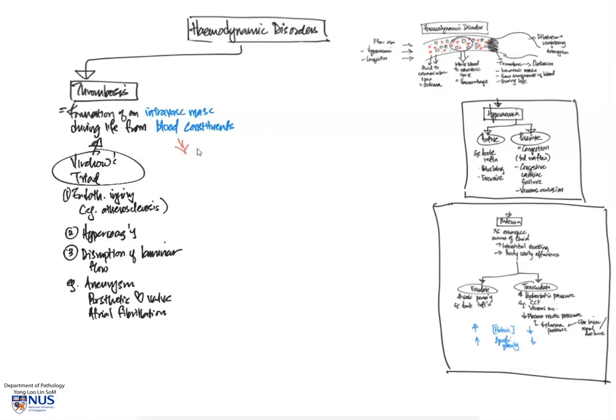So what is the danger of thrombosis? This gives rise to its complications because of vascular occlusion. For example, if there is a coronary artery, a very important artery that supplies the myocardium, and say this has an atherosclerotic plaque.